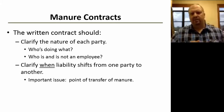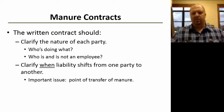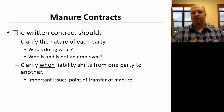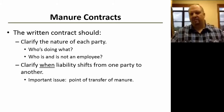An important factor to include is clarifying when liability shifts from one party to another. For example, once manure is loaded on the truck or tanker, it becomes the hauler's responsibility. Once it gets to the farm and onto the land, it becomes the applicator's liability. Those are the kind of factors you want in the contract so that everybody is clear on their responsibility and their potential liability.